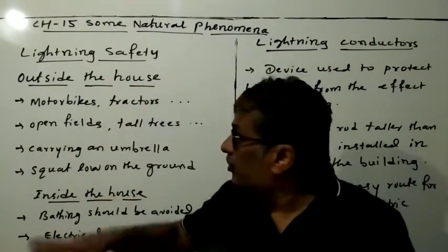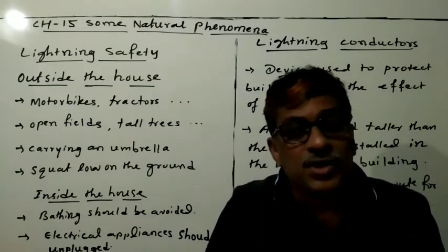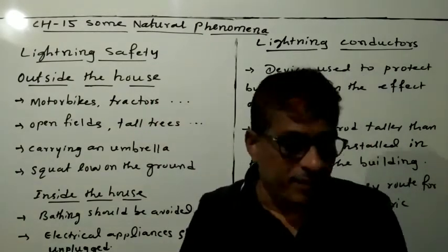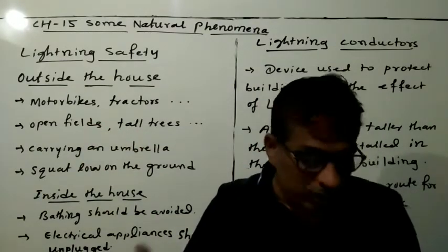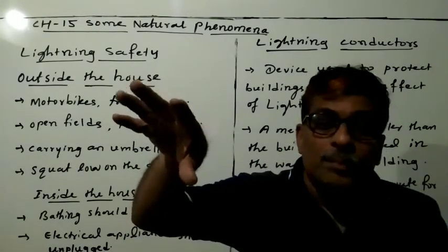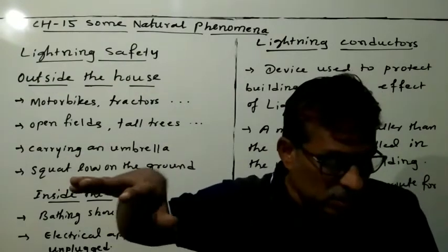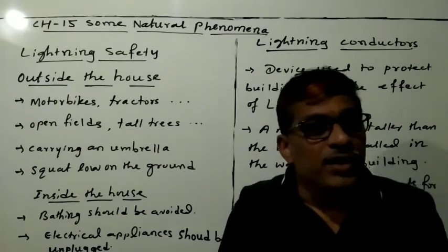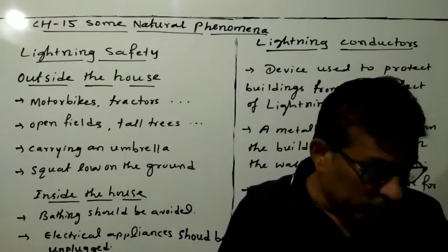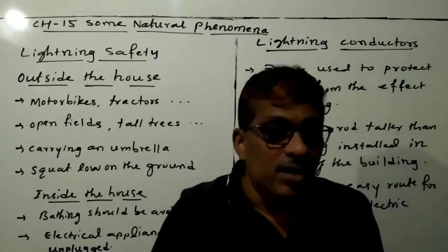Outside the house, motorbikes, tractors, construction machinery such as JCB, and open cars are not safe. Open trees and tall trees, shelters in parks, and elevated or high places do not protect from lightning — you should stay away from all of these. Carrying an umbrella is also not a good idea during thunderstorms.